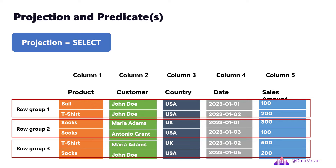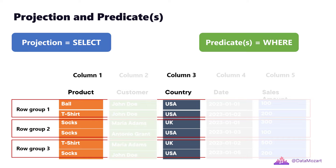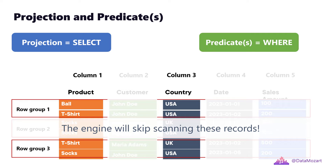Projection refers to a SELECT statement in SQL language — which columns are needed by the query? Back to our previous example, we need only the product and country columns, so the engine can skip scanning the remaining ones. Predicates refer to the WHERE clause in SQL language — which rows satisfy criteria defined in the query? In our case, we are interested in t-shirts only, so the engine can completely skip scanning row group 2, where all the values in the product column equal socks.